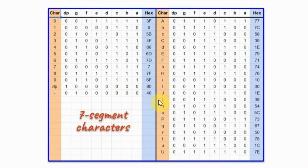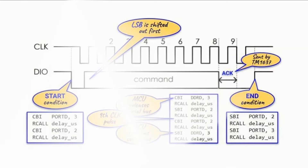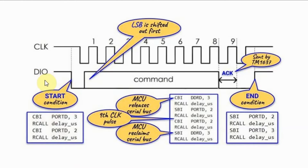This is the timing diagram for sending a byte serially to the TM1637. Over the clock line we need nine clock pulses — eight for sending the byte of data and the ninth to receive the acknowledgement pulse from the TM1637. To send a byte over the DIO line, we first send the start condition, then the byte, wait for the acknowledgement, and then send the end condition.